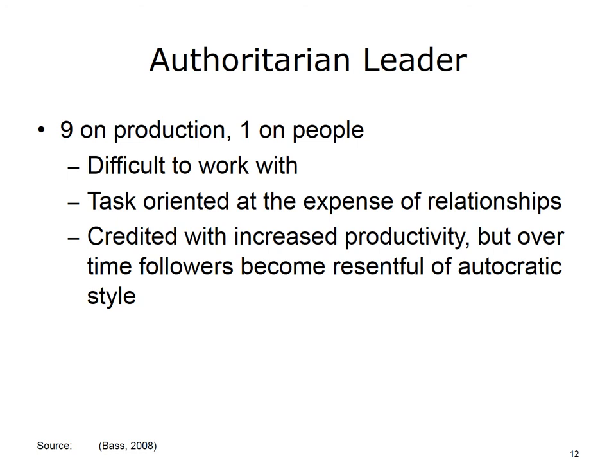If we begin by looking at authoritarian leaders, these would be leaders who are high-task and low-relationship, represented by the number 9 on the production level and 1 on the focus for people. People who get this rating are very much task-oriented and are very difficult to work with and are hard on their workers, meaning that they are an autocratic type. As stated by Bernard Bass in the Handbook of Leadership, the authoritarian approach can contribute to increased productivity levels in the workforce, but over extended periods of use, it has an adverse reaction on individuals because of the autocratic style.